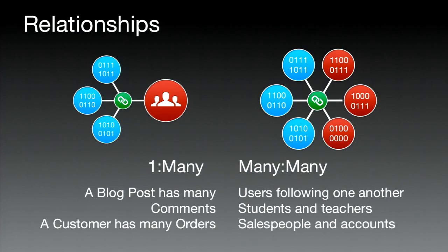There are actually three kinds of relationships you can have in your app — this is independent of Parse. The first is a one-to-one relationship, which I won't dive into here; it's a special case. For now, let's focus on the predominant types: one-to-many relationships and many-to-many relationships.